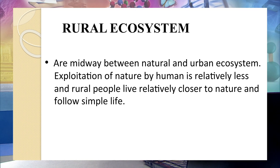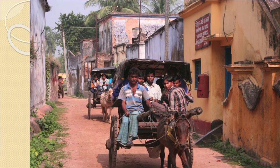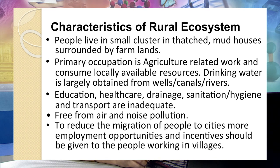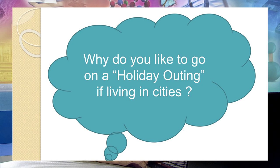Next is rural ecosystem. Rural ecosystems are the midway between natural and urban ecosystems. Exploitation of nature is relatively less and rural people live relatively closer to nature and follow a simple life. Their characteristics: people live in small clusters in thatched and mud houses; primary occupation is related to agriculture; education, healthcare, drainage, and transport are inadequate — which is one reason people tend to move to urban settlements. They are free from air and noise pollution and they reduce migration of people to cities. More employment opportunities need to be generated there.